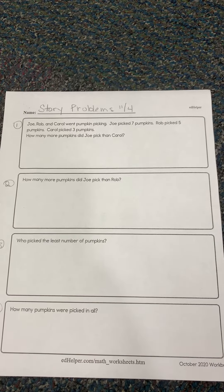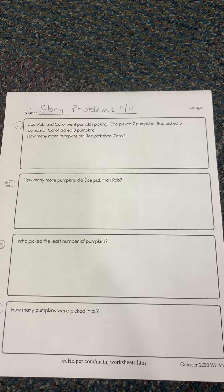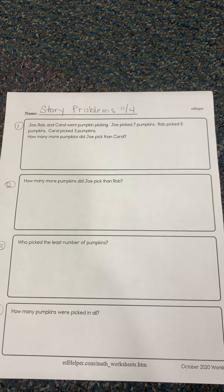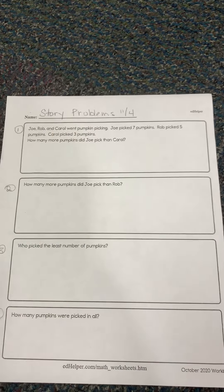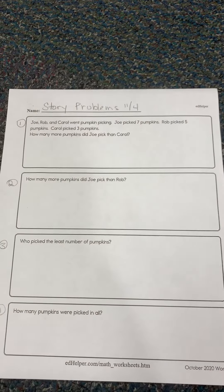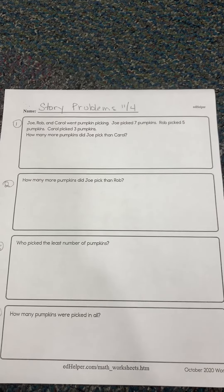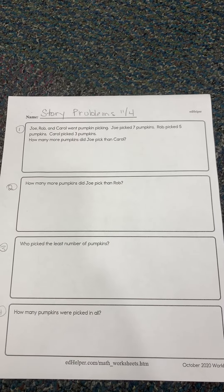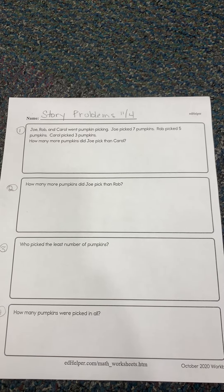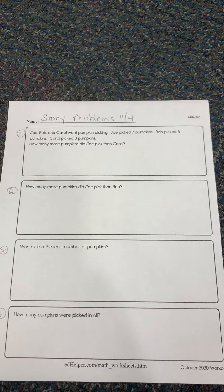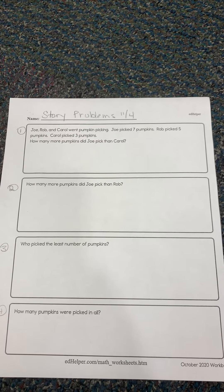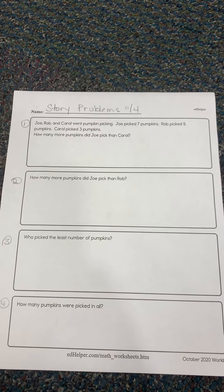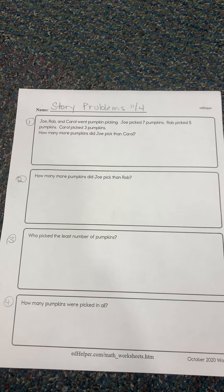How many more pumpkins did Joe pick than Carol? This one's kind of tricky, but remember, they don't ask about Rob, so you don't even need to know that Rob picked five. How many more pumpkins did Joe pick than Carol? You're going to look at Joe — because it says 'how many more,' that means we're going to subtract. He had seven and Carol had three, so seven minus three equals what? That's your answer to number one.